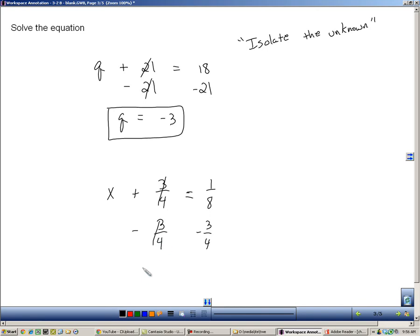So those will cancel out giving me x equals. Now I've got to figure out what 1 eighth minus 3 fourths is. I'm going to do this horizontally because this allows me to get common denominators a little bit easier. Well the common denominator is 8. So I need to multiply this fraction by 2 over 2 giving me new fractions of 1 over 8 minus 6 over 8. 1 minus 6 is negative 5. So this ends up being negative 5 over 8.